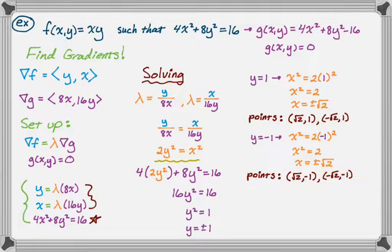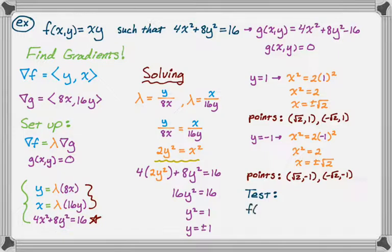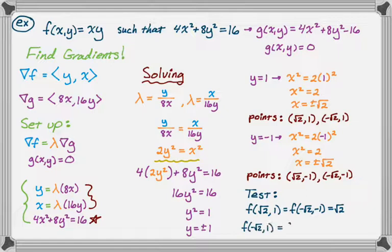Now we take the four points and test them in f(x,y) = xy. If x and y have the same sign, we get the same value: f(√2, 1) = f(−√2, −1) = √2·1 = √2. If x and y have opposite signs: f(−√2, 1) = f(√2, −1) = −√2.